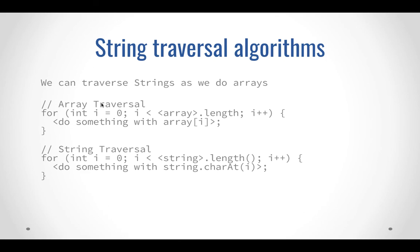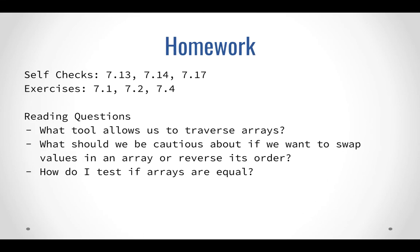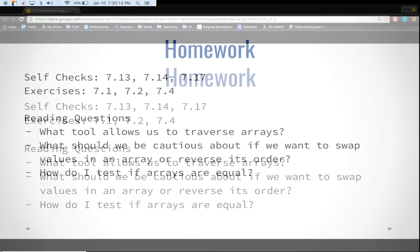This is probably looking a lot like the string traversal algorithms we did earlier in the school year. Traversing an array with a for loop from i = 0 up until array length is the exact same thing we did with a string from zero up through string.length(). One slight difference: arrays do not have parentheses for length because it's a property, not a method. A string requires calling a method to determine its length. Traversing an array and a string looks very similar — you go from zero up until the length of whatever you're traversing. All right, there's our homework and reading questions — have an excellent day.